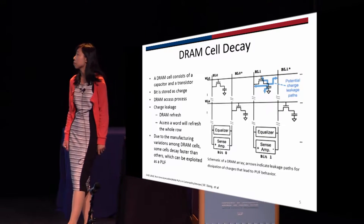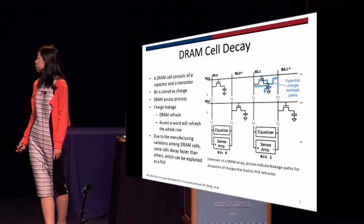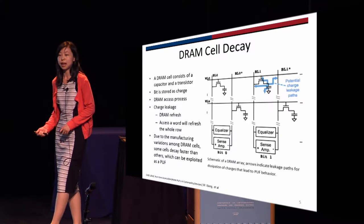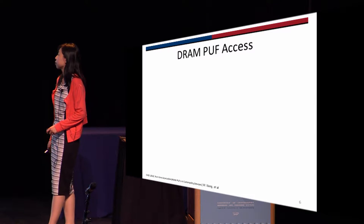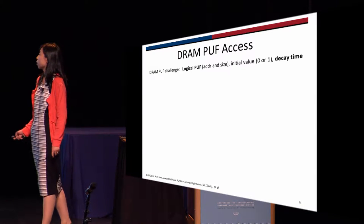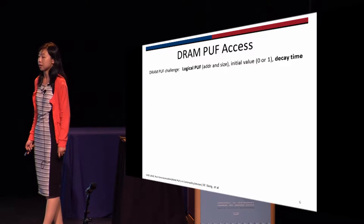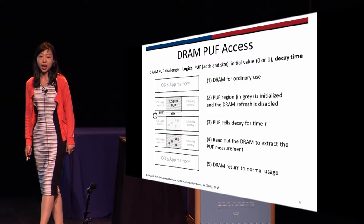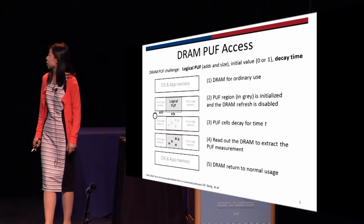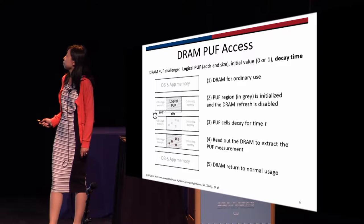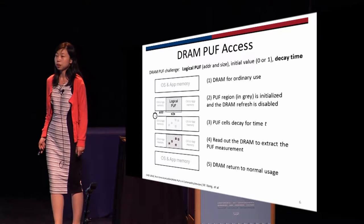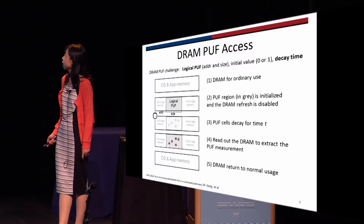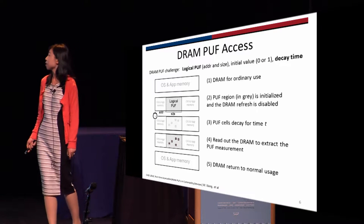But how is DRAM related to PUF? Due to manufacturing variations, some DRAM cells decay faster than others, and we exploit this as a PUF. The challenge consists of the logical PUF defined by the starting address and the size, an initial value, and a decay time. In the beginning, we have normal DRAM working ordinarily. Then the PUF region defined by the address and the size is reserved, which means other parts of the system cannot access it. It is initialized by the initial value — either 0 or 1; in our experiment it's all 0.